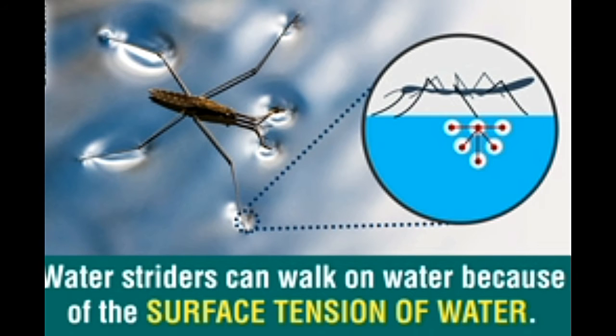Surface tension is a physical phenomenon that we observe in our daily life. Raindrops take a spherical shape. Tears of wine are seen in a glass on pouring an alcoholic beverage in it, formation of spherical soap bubbles - all these are examples of surface tension.